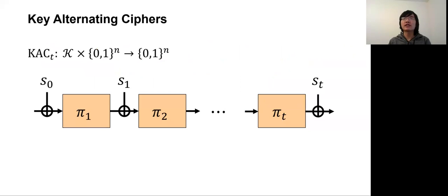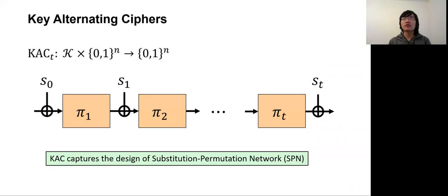A t-round key alternate cipher construction is built on t public permutations pi-1 to pi-t, and consists of t+1 subkeys s0 to sd. The KAC has received considerable attention because it captures the design of substitution permutation networks, with the most prominent candidate being AES.